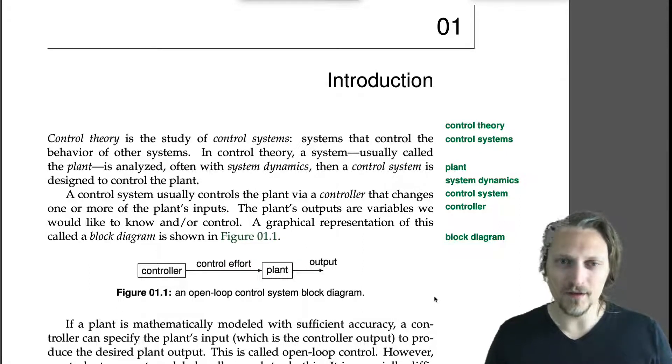Control theory is the study of control systems, systems that control the behavior of other systems. In control theory, a system, usually called the plant, is analyzed often with system dynamics. Then a control system is designed to control the behavior of the plant.